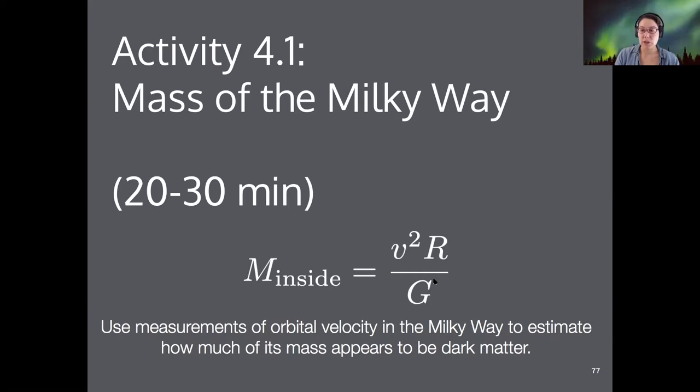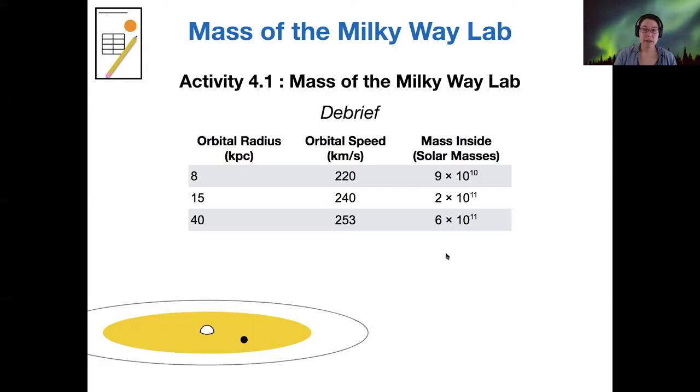So what you're going to do is use measurements of orbital velocity in the Milky Way to measure how much mass must be dark matter. I gave you this table of different orbital radii, the orbital speeds of objects measured at those radii, and then this is the mass inside that you can calculate using those numbers in units of solar masses.